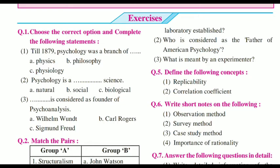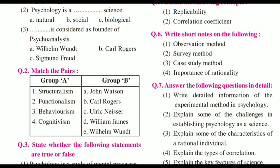Next is match the column. First one, structuralism — it was given by William Wundt, E. Second, functionalism — William James, D. Third one, behaviorism — John Watson, A. And fourth one, cognitivism — C, Ulrich Neisser. So the answers are: William Wundt, William James, John Watson, and Ulrich Neisser.